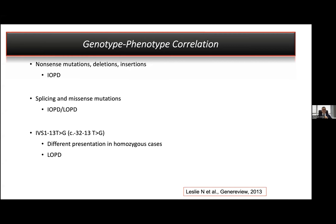That was my last slide. Thank you for listening. My final point is that exon 18 deletion definitely causes infantile onset Pompe disease. Thank you very much.